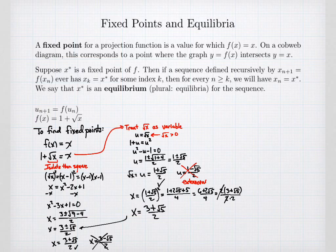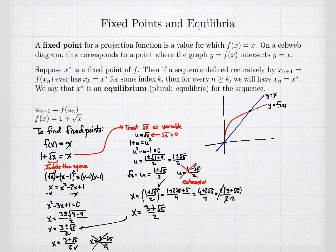This function has one fixed point. Graphing y = 1 + √x and y = x shows them intersecting at x = (3 + √5) / 2. If the sequence ever reaches this value, it stays there. In future classes, we'll discuss the stability of fixed points — whether a sequence converges toward or moves away from a fixed point. Thanks for watching, hope that helped.